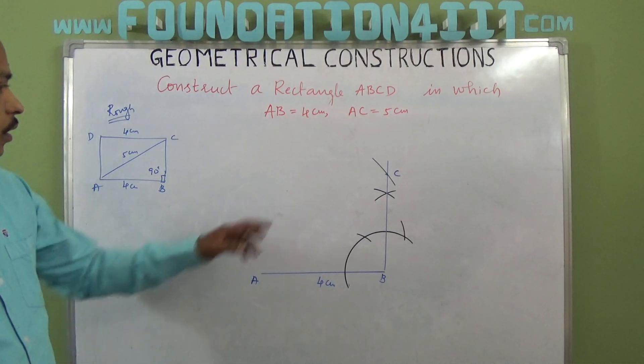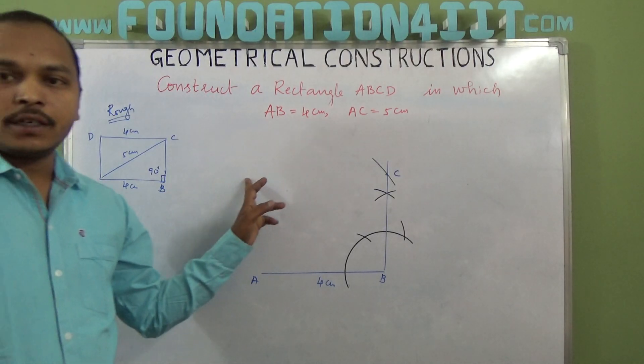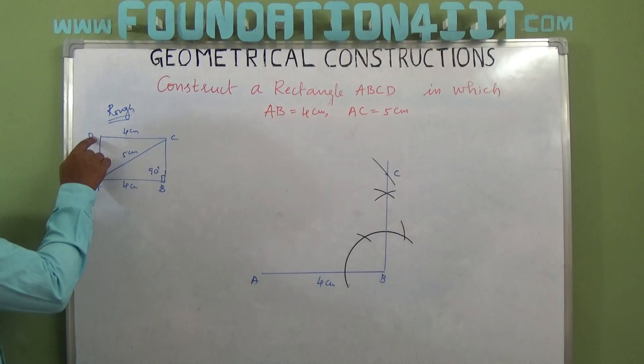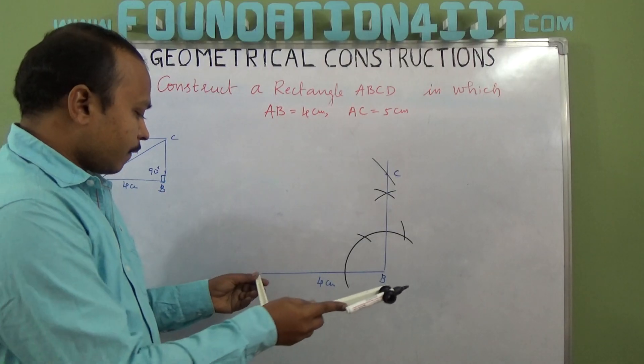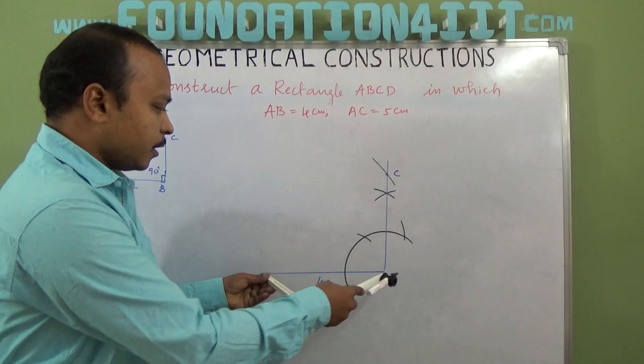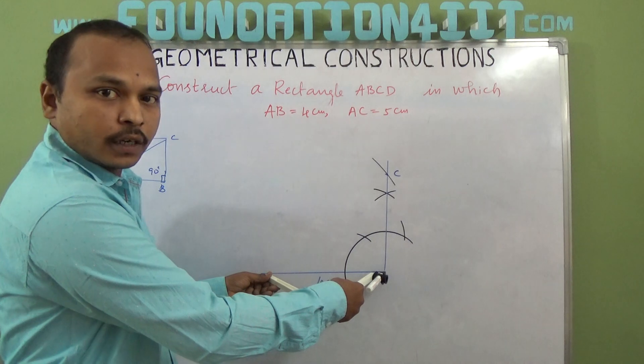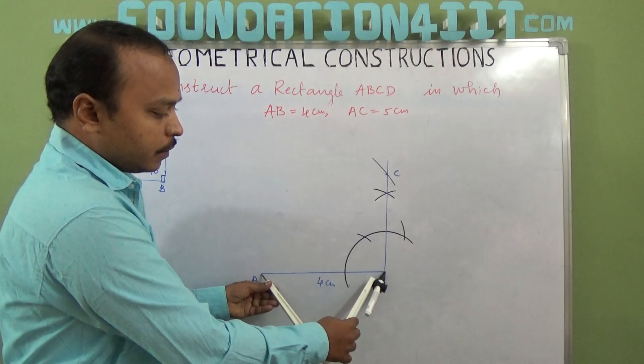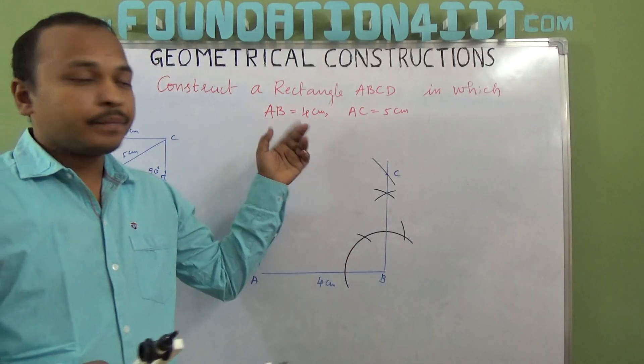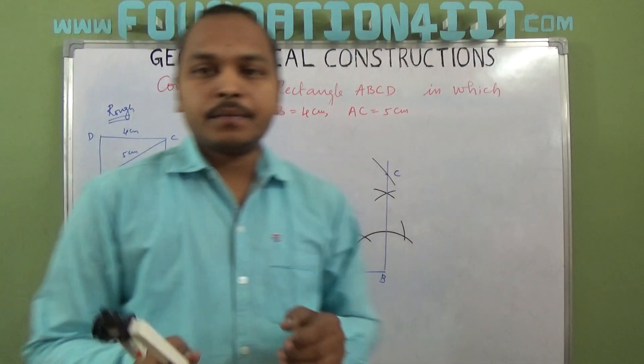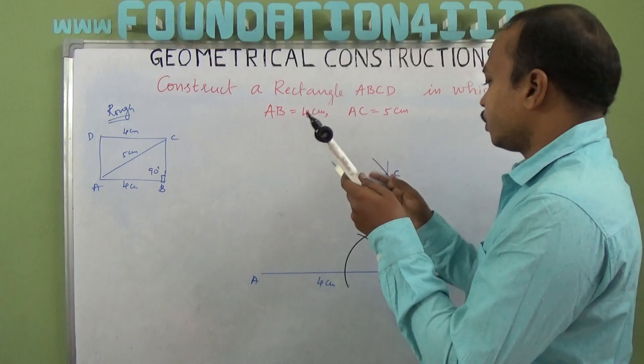Now observe again, the point D is here. But C to D is 4 cm and A to D is the same as B to C. Now whatever distance is AB, the same measurement, because opposite sides are equal, C to D also the same. So from C you draw an arc.